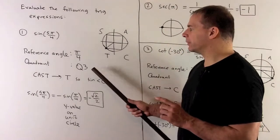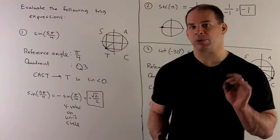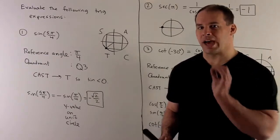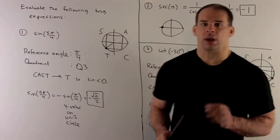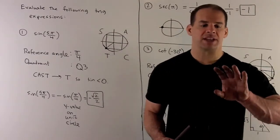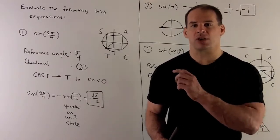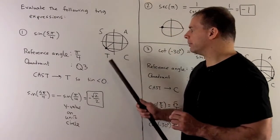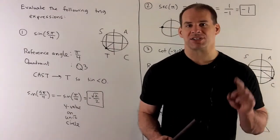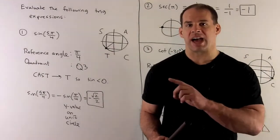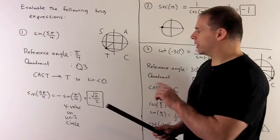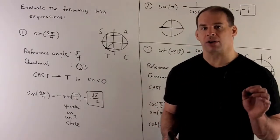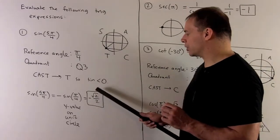Since we're in quadrant 3, we need to figure out the plus and minus signs using the CAST method. You take your letters C, A, S, T starting in quadrant 4 going counterclockwise, and the letter tells you which function is positive in that quadrant. In quadrant 3, tangent is positive, while cosine and sine are negative. We're looking for sine, so we know we have a minus sign. Our reference angle gives us √2 over 2, and the quadrant gives us a minus sign, so our answer is −√2 over 2.